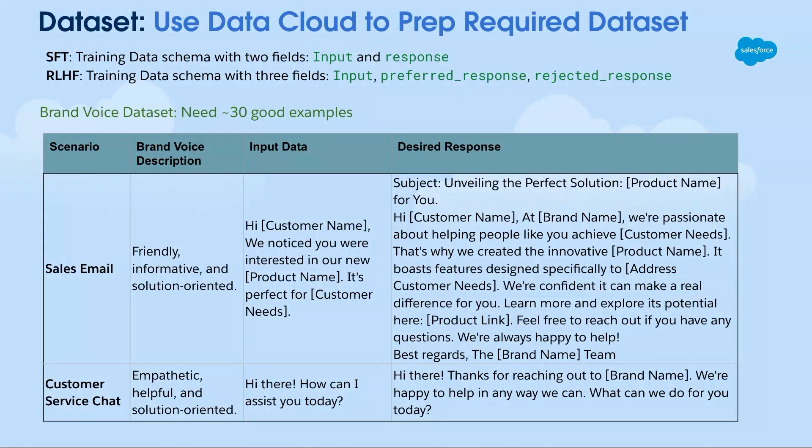The dataset you use to fine-tune your models is very important. There are two ways to fine-tune: supervised fine-tuning and RLHF. Supervised fine-tuning requires two fields — the input and the response. RLHF requires three fields — input, preferred response, and rejected response — so there's a feedback loop as part of it.